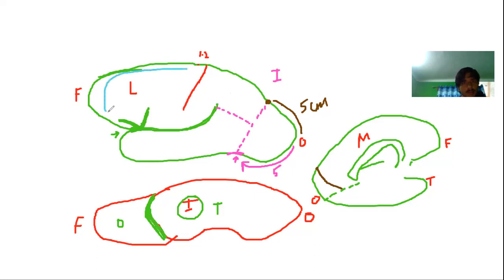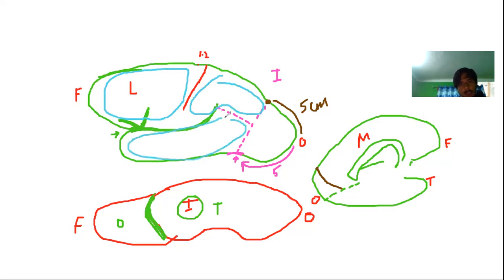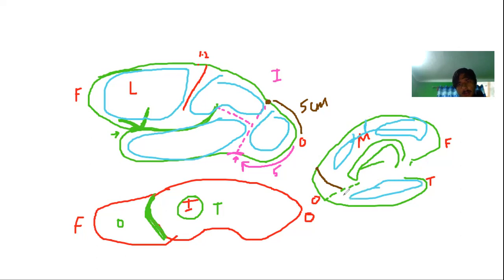With these boundaries established, the lobes of the cerebral hemisphere are: the frontal lobe, the parietal lobe, the temporal lobe, and the occipital lobe. In the lateral view, the frontal lobe is in front of the central sulcus, the parietal lobe is behind it, the temporal lobe lies below the posterior rami, and the occipital lobe is at the posterior end.